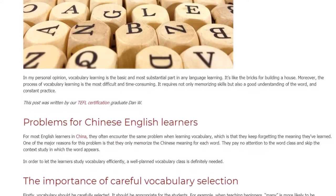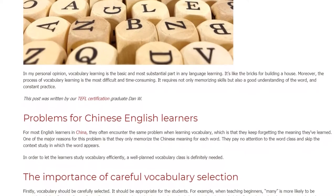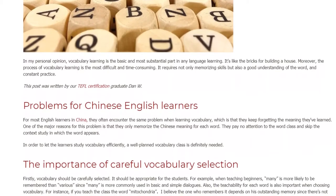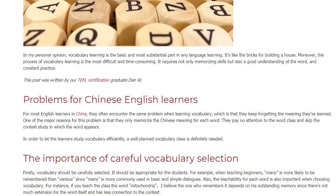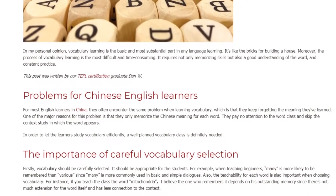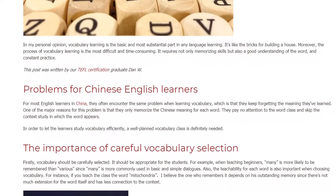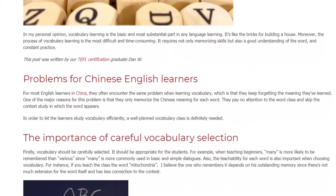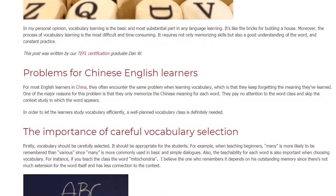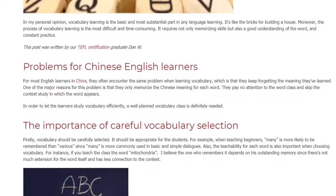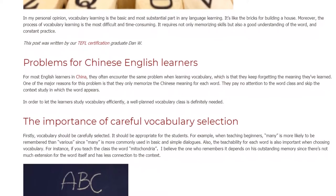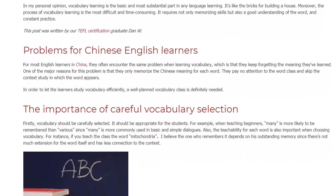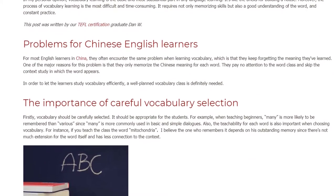Firstly, vocabulary should be carefully selected. It should be appropriate for the students. For example, when teaching beginners, 'many' is more likely to be remembered than 'various' since 'many' is more commonly used in basic and simple dialogues. Also, the teachability for each word is important when choosing vocabulary. For instance, if you teach the class the word 'mitochondria', the one who remembers it depends on outstanding memory, since there's not much extension for the word itself and it has less connection to context.